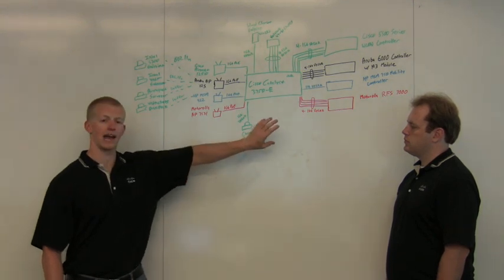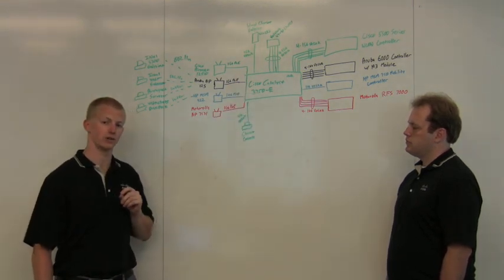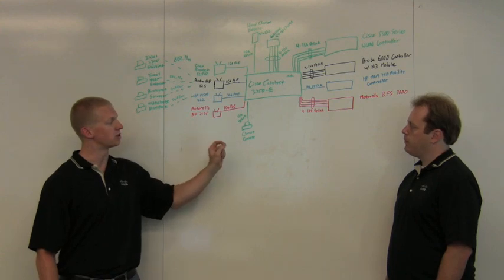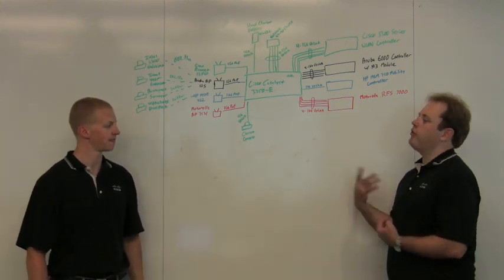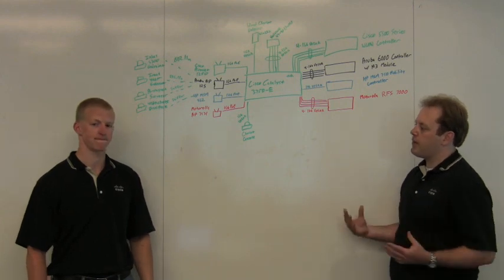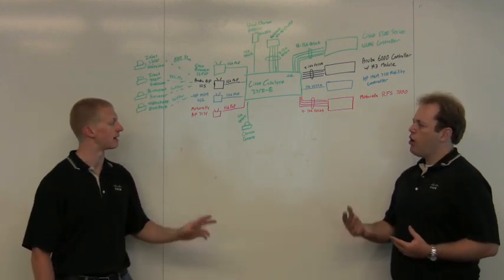Each controller had a 4GB port channel connected to it, except for HP. Because of HP's controller design, we used one gigabit uplink. So really you follow the vendor's recommendations when you set up and interconnect all these controllers into the network. Exactly.